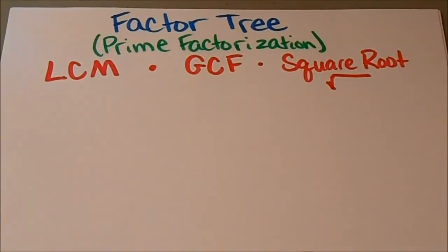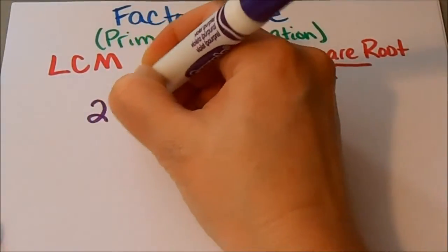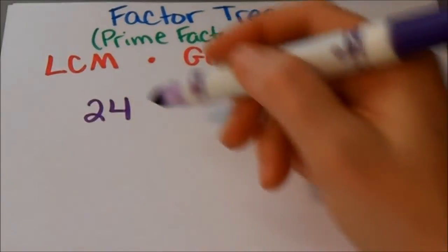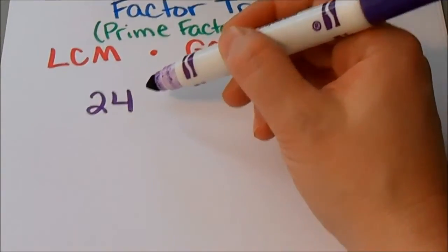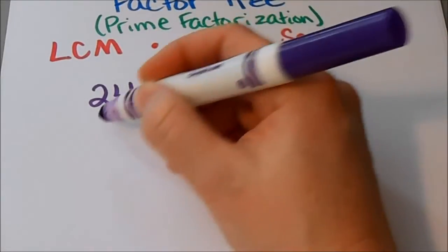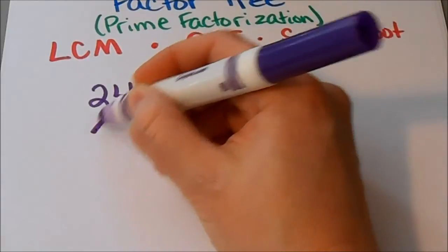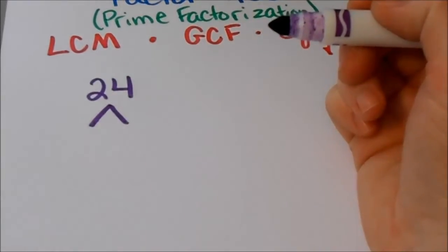Let's go ahead and get started and I'll show you exactly what I'm talking about with prime factorization. I always like to start with an easy example, so we're going to start with the number 24. We're just trying to figure out what prime numbers we can multiply together to get to 24, so I'm going to divide 24 up into different numbers to figure out those small factors.